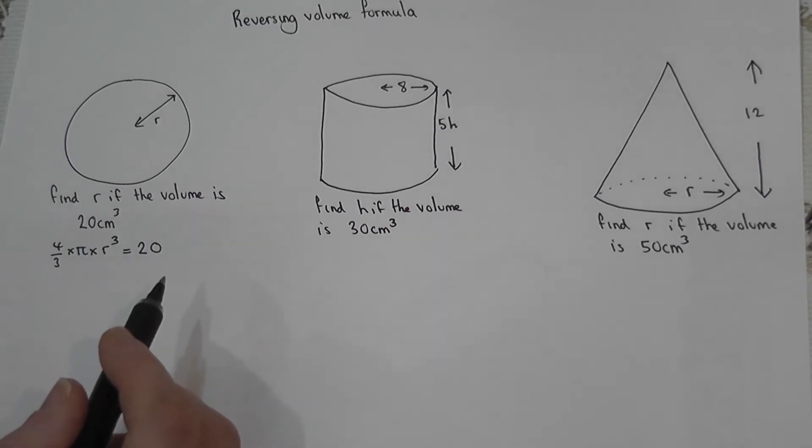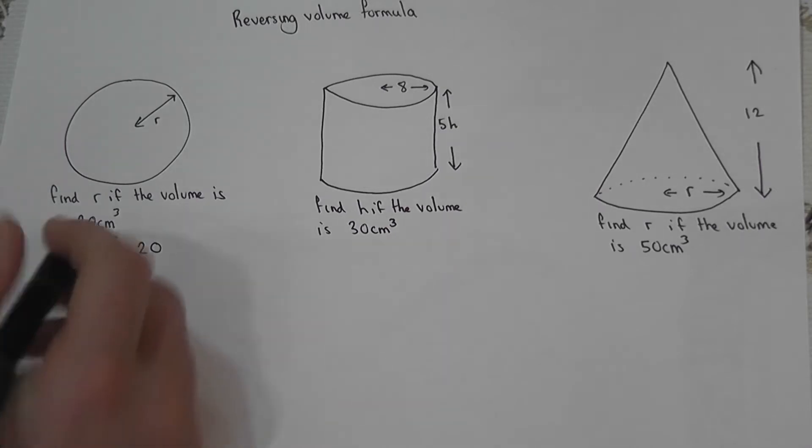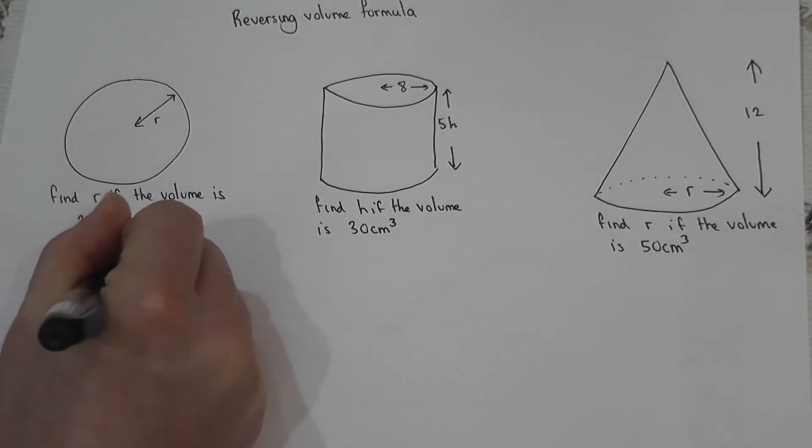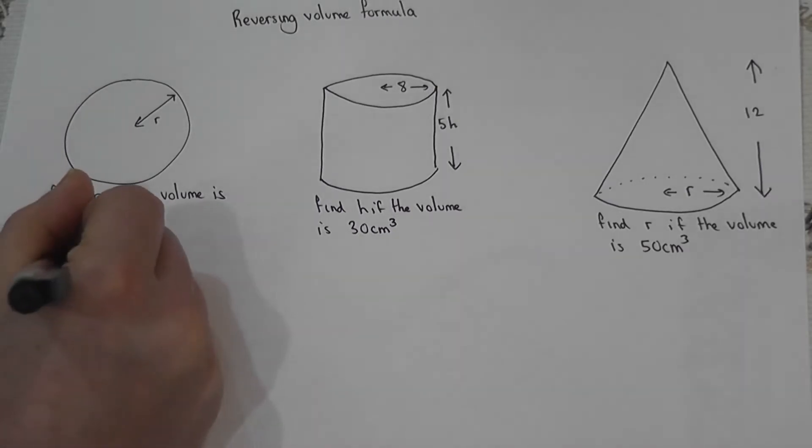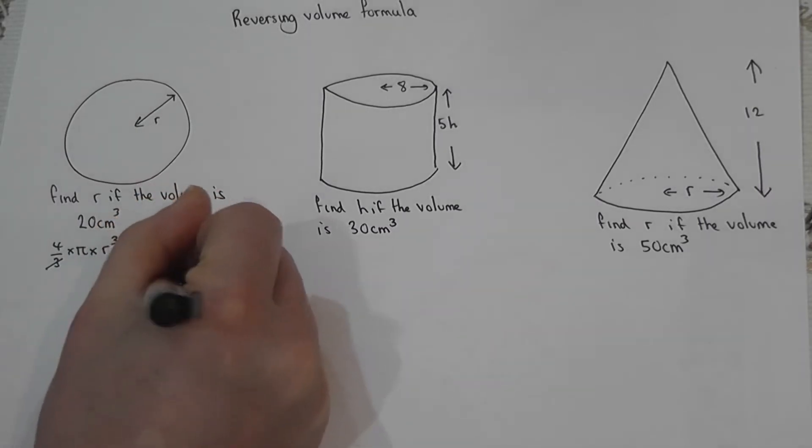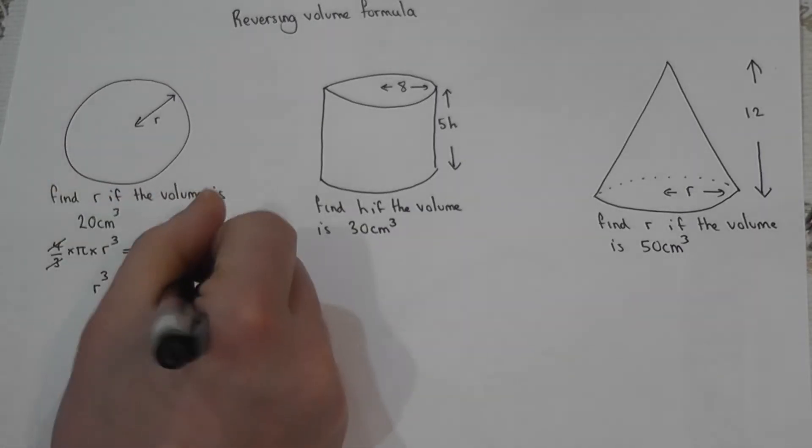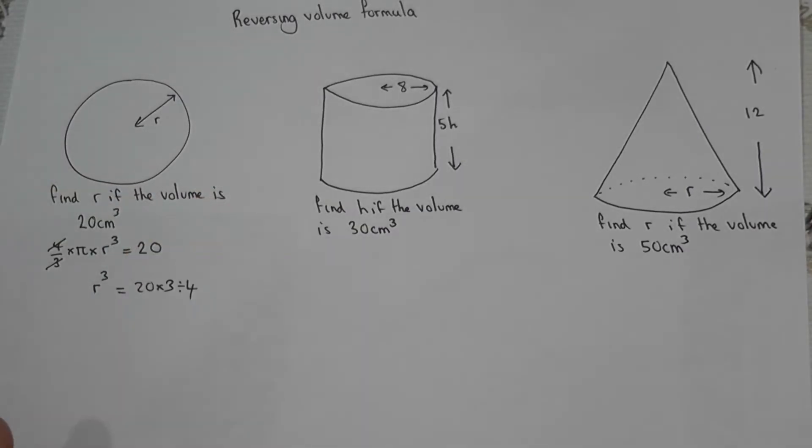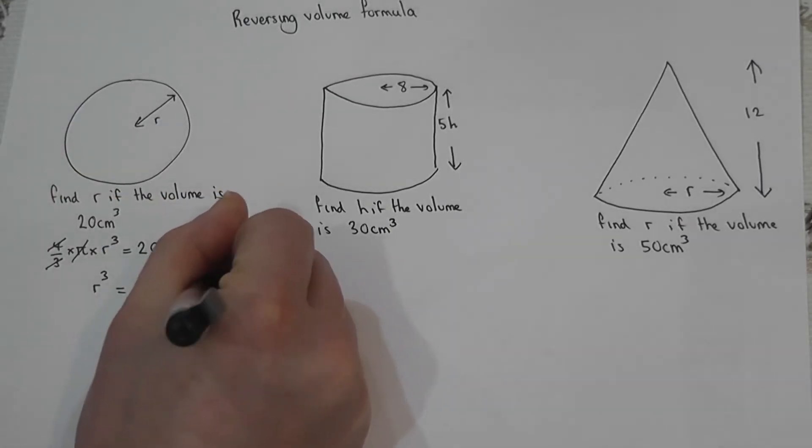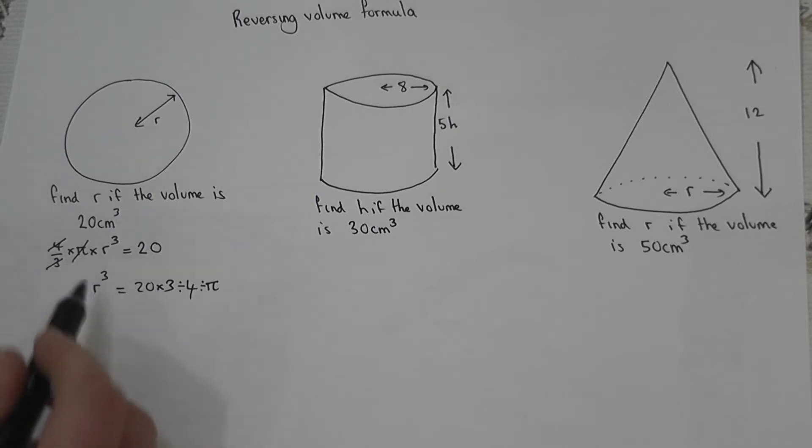So here we have an over 3. So to work out what r is, first of all we times by 3, then we do the opposite of times by 4, we divide by 4, and then we divide by pi. We're doing the opposite operation to cancel off, and this leaves us with r cubed.